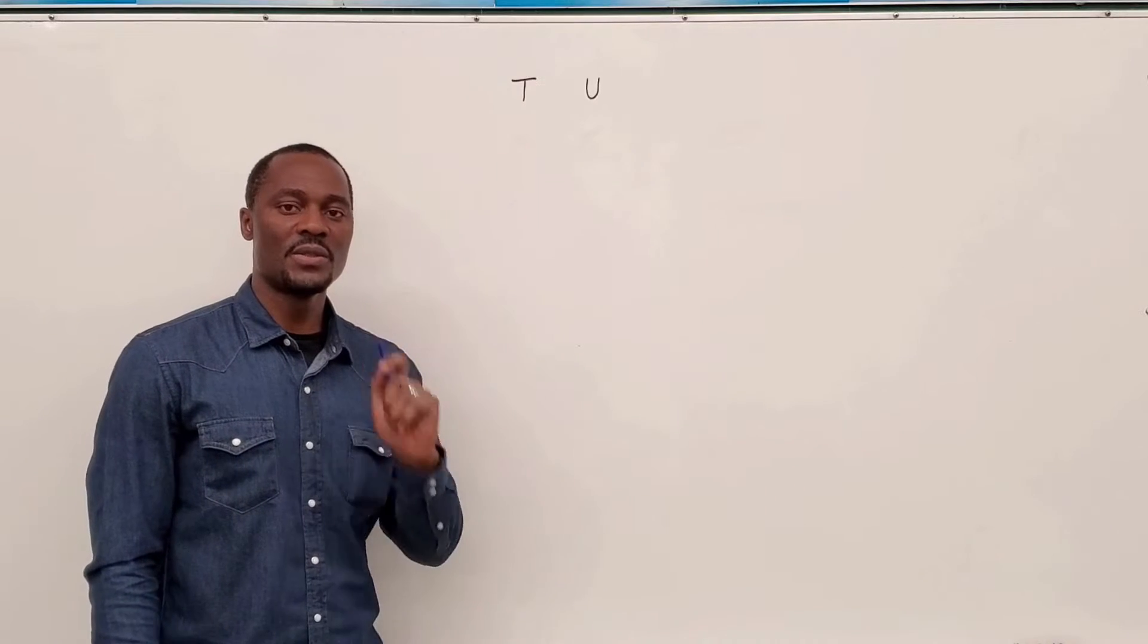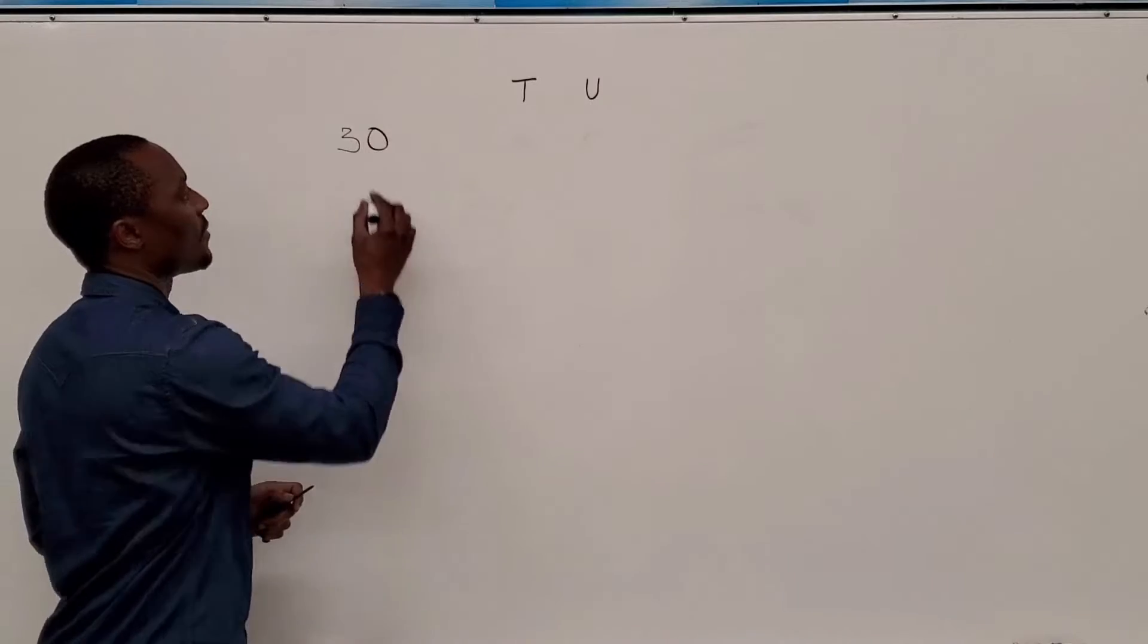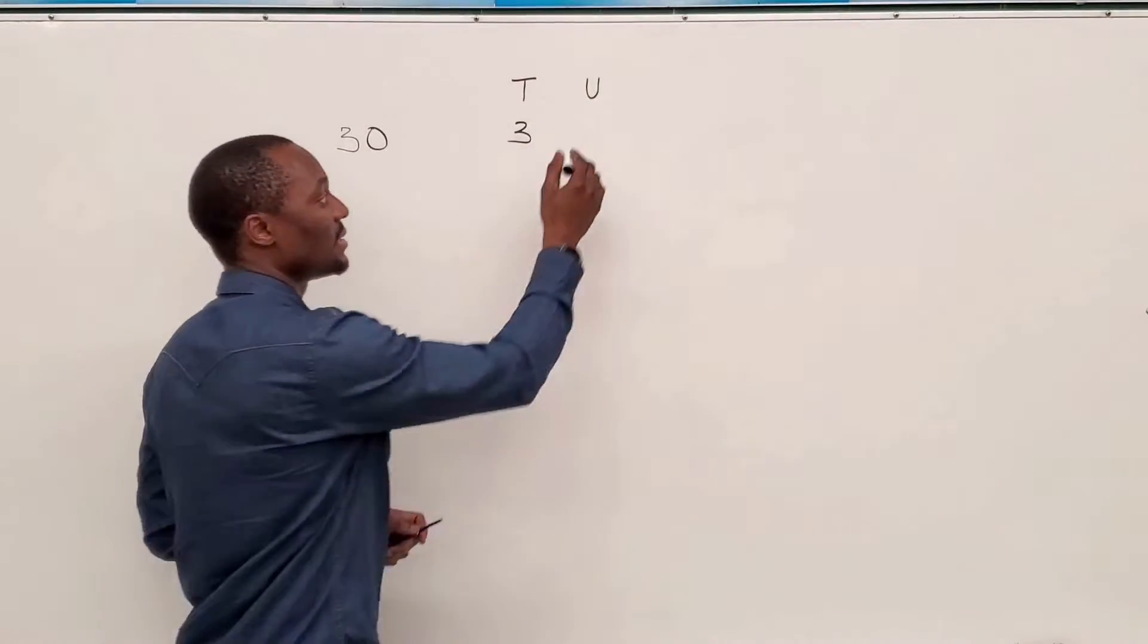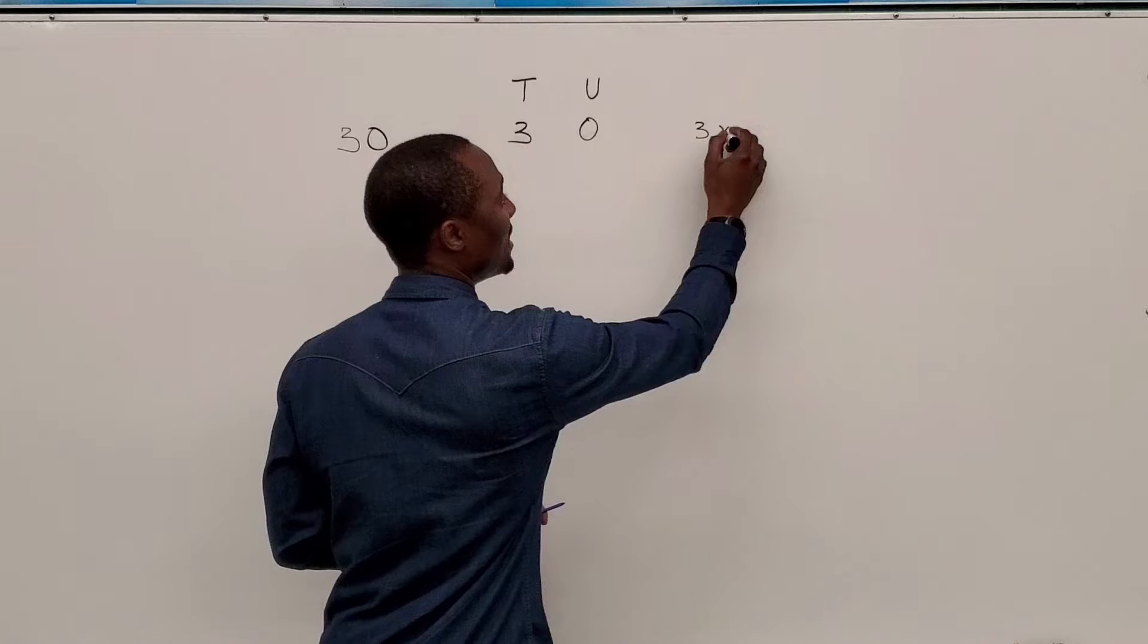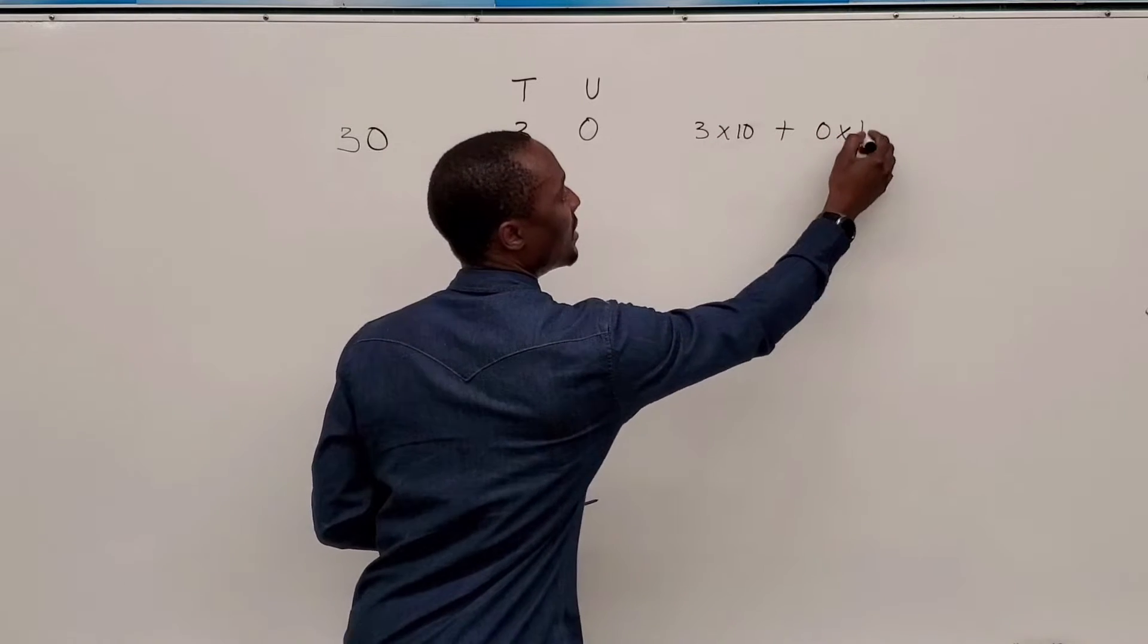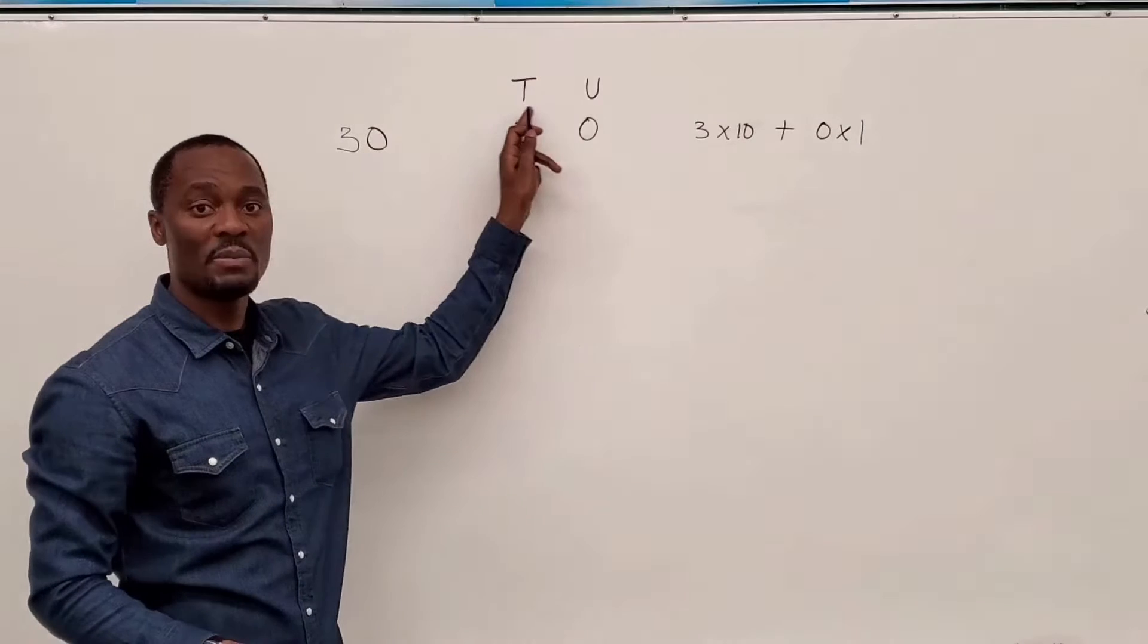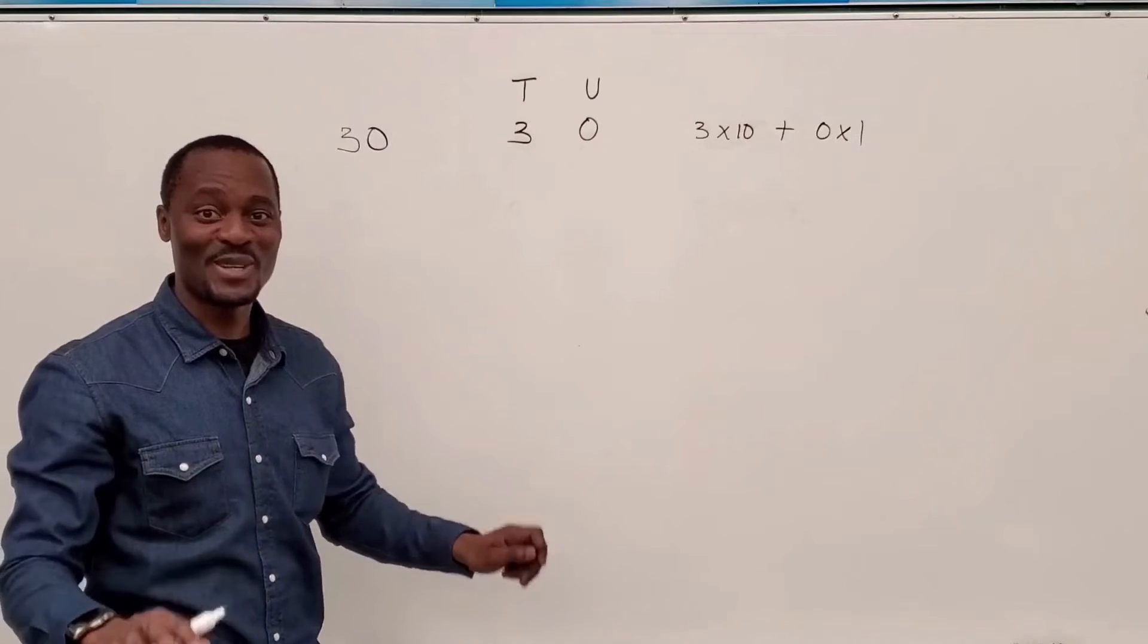Assuming you're given the number 30, it means you are having three tens and no units, which you can write as three times ten plus zero times one. That's the meaning of 30. Three multiplied by ten plus zero multiplied by one. Remember place value in lower grades? Yes, that's exactly what we're doing.